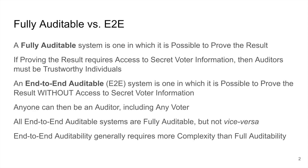Let's start out with some terminology. A fully auditable voting system is one in which it is possible to prove the result. If proving the result requires access to secret voter information, then auditors must be trustworthy individuals. An end-to-end auditable, or E2E, system is one in which it is possible to prove the result without access to secret voter information. Anyone can then be an auditor, including any voter. All end-to-end auditable voting systems are fully auditable, but not vice versa. End-to-end auditability generally requires more complexity than full auditability.